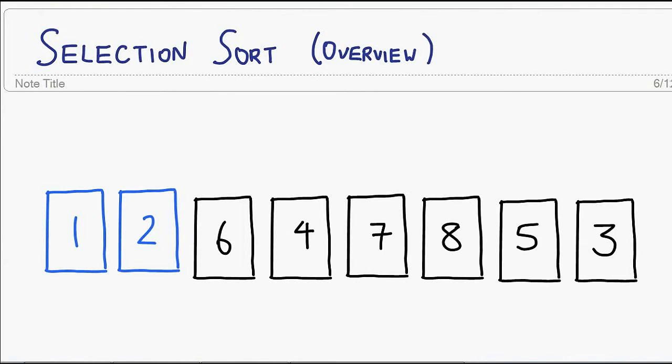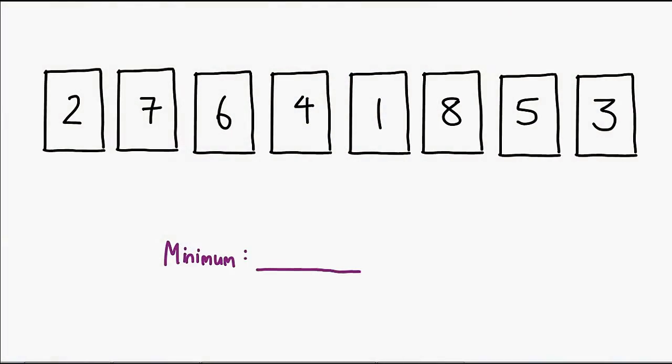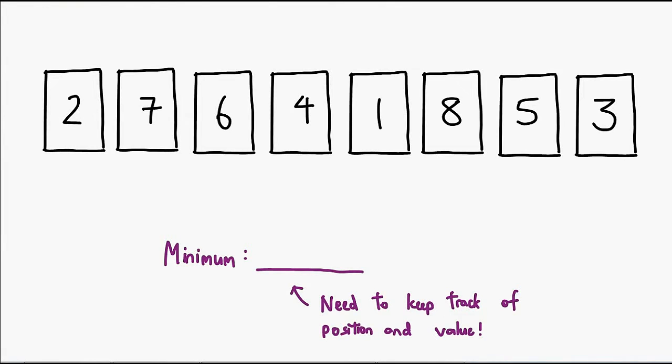Just based on this description, you should have a pretty good picture on how this sorting algorithm works, but I'm going to go ahead and trace it for you anyway. Here is our unsorted list. One important thing to note is how we're going to actually find a minimum element within this list. What we will need is a variable outside of the original list, which keeps track of what is the minimum encountered value.